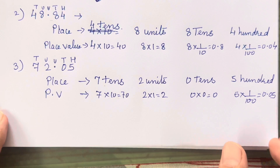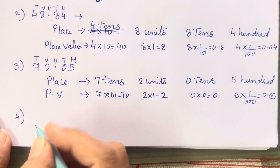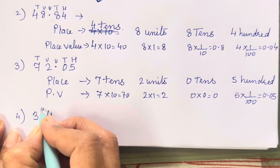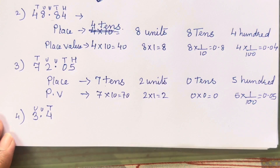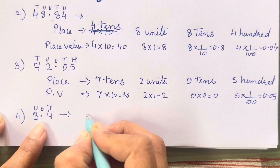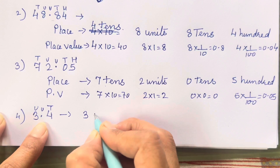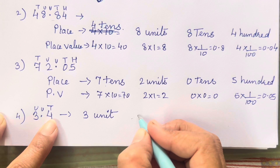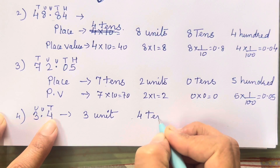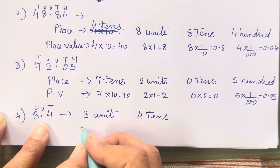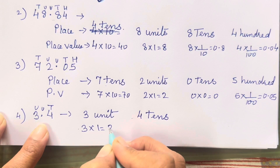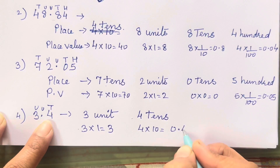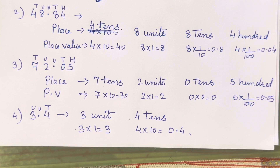Let's solve the fourth sum: 3.4. Units and tenths. So: 3 in the units place, 4 in the tenths place. Place values: 3×1 = 3; 4×(1/10) = 0.4.